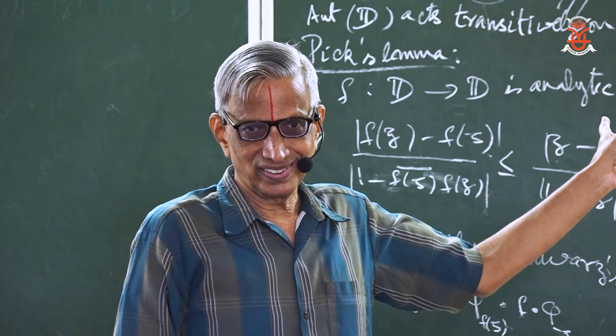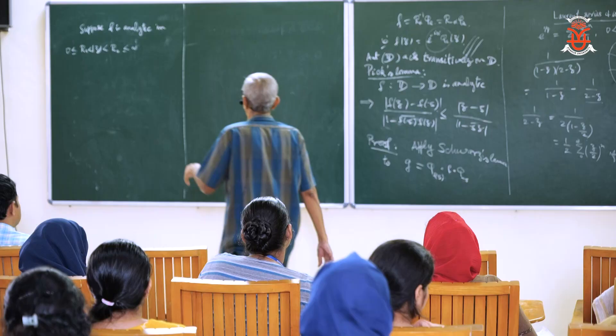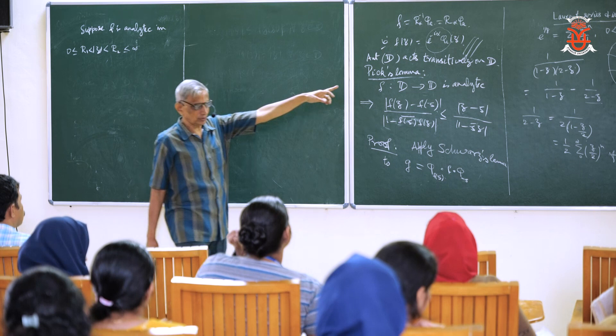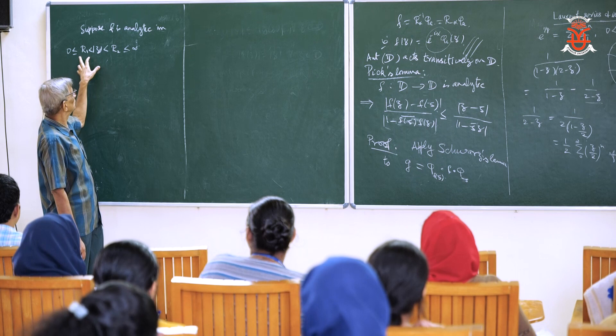There are three possibilities: when r1 is 0 and r2 is infinity, you have the punctured plane. When r1 is 0 and r2 is finite, you get a punctured disc. When r1 is non-zero and r2 is finite, you get a proper annulus.